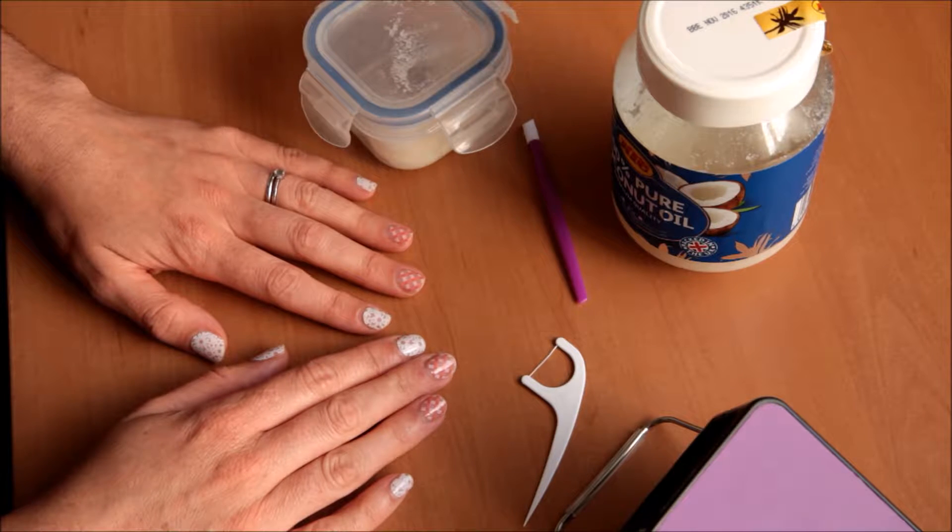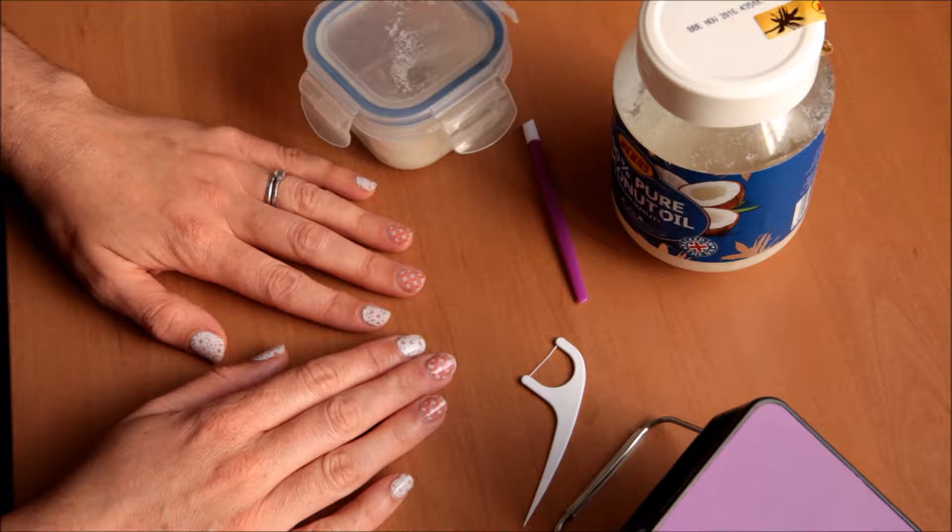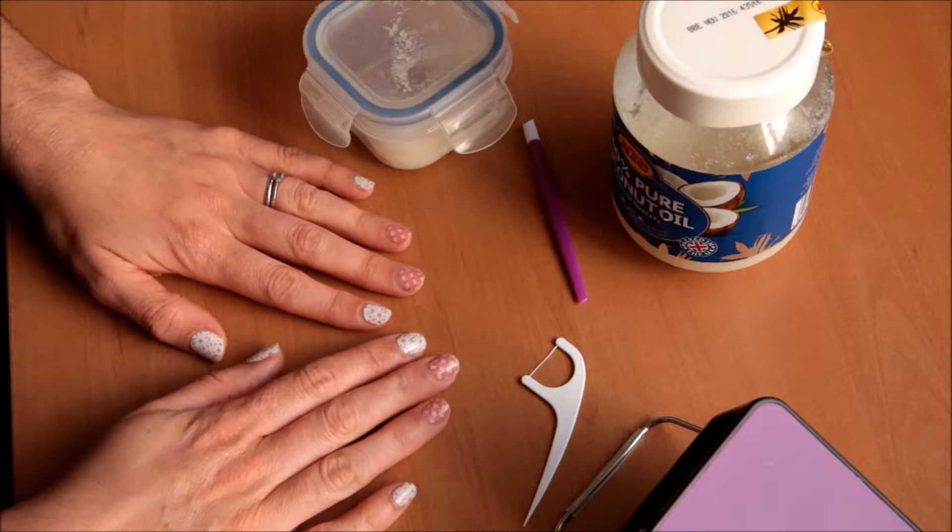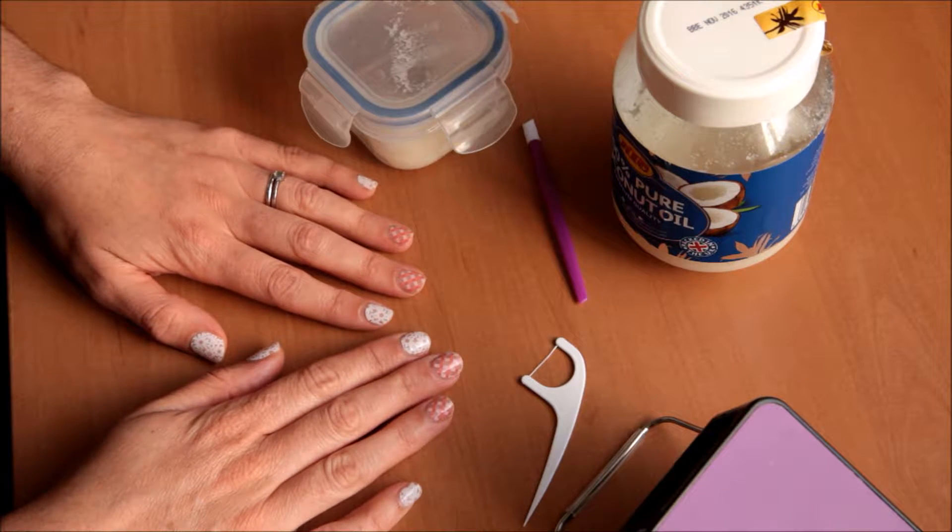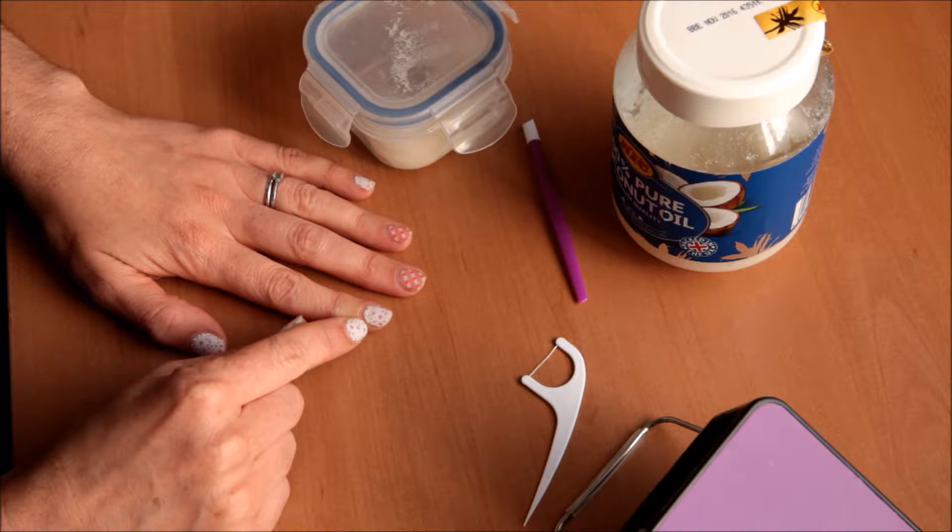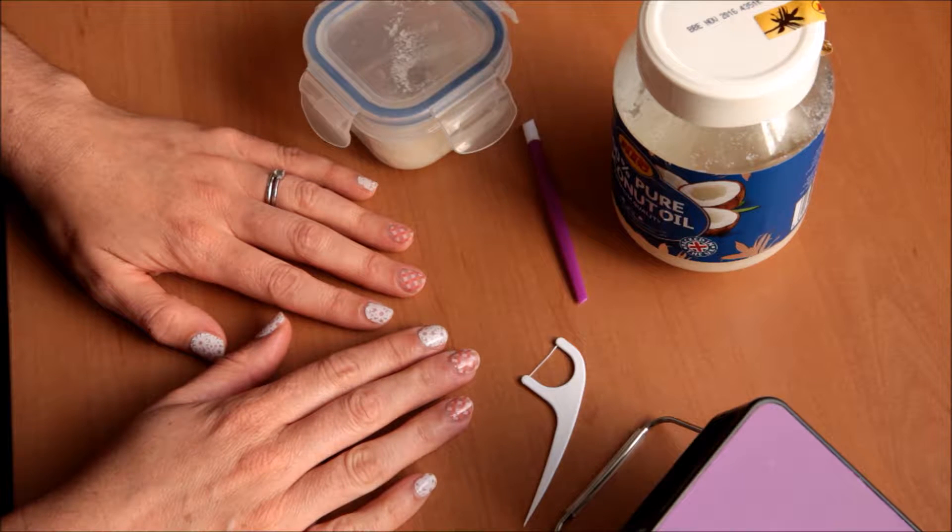Today I want to show you two methods of removing your Jamberry nail wraps using coconut oil. I like to use coconut oil as it has no chemicals in and it moisturizes your nails and cuticles at the same time as removing the wraps.